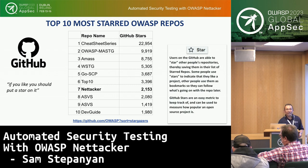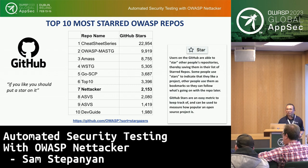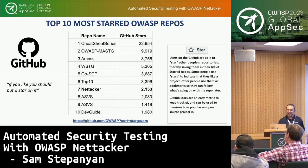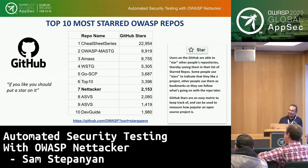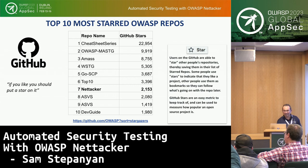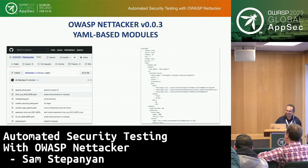In case you didn't know, GitHub has its own top 10 most starred OWASP repos. NetTacker is currently number 7 — it used to be number 10, and we are now just below OWASP Top 10. I'm proud to say there are more people who have starred NetTacker than ASVS on GitHub. Please check out NetTacker and put a star on it.